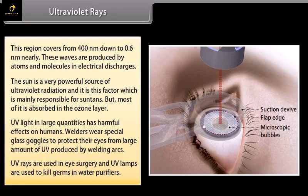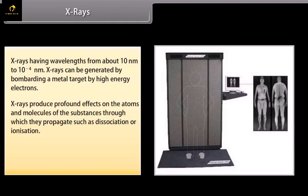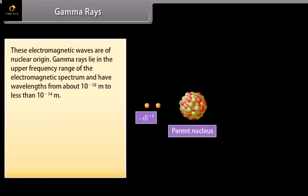X-rays. X-rays having wavelengths from about 10 nanometer to 10 raised to the power minus 4 nanometer. X-rays can be generated by bombarding a metal target by high-energy electrons. X-rays produce profound effects on the atoms and molecules of the substances in which they propagate such as dissociation or ionization. X-rays are used in medical applications such as diagnostic tool in medicine and as a treatment for certain forms of cancer.